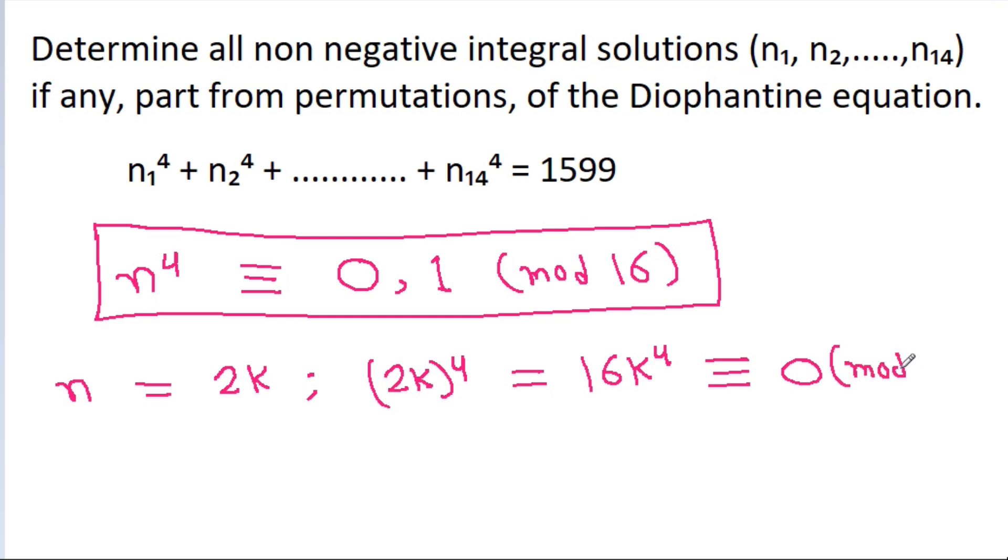And n can be odd, 2k+1, and (2k+1)² = 4k² + 4k + 1, which equals 4k(k+1) + 1.